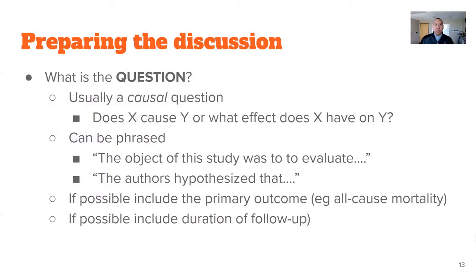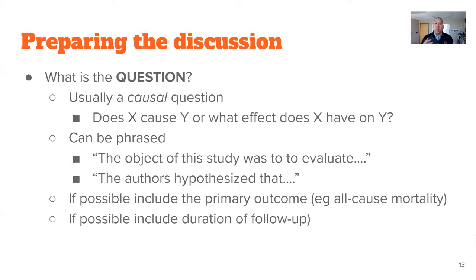If you're doing the larger discussion, how do you prepare? The first thing is: what is the question? It's usually a causal question — does X cause Y, or what effect does X have on Y? It's often phrased as 'the objective of the study was to evaluate this' or 'the authors hypothesize that.' If possible, include the primary outcome — was it all-cause mortality? — and the duration of follow-up. That helps frame the question for everyone else in the group.